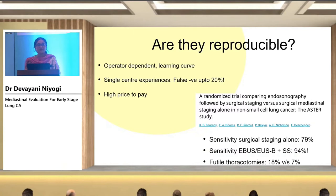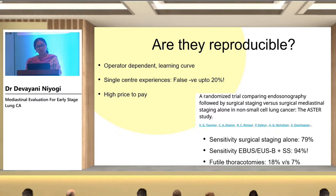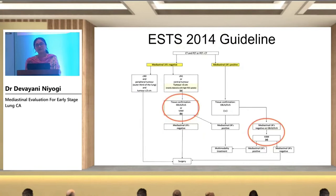The question remains: are these fantastic results reproducible? EBUS is operator dependent and associated with a significant learning curve. Single center experiences started reporting false negative rates as high as 20%, which is a very high price to pay in lung cancer. This was shown in the ASTER trial, which pitched the combination of EBUS and mediastinoscopy against surgical staging with mediastinoscopy alone. The combination of EBUS with mediastinoscopy yielded a sensitivity of 94% and brought down futile thoracotomy rates from 18% to 7%. The ASTER trial formed the basis for the ESTS 2014 guideline, which remains the latest version.